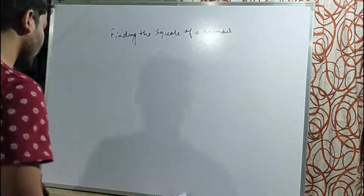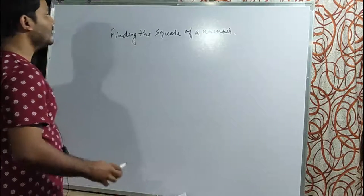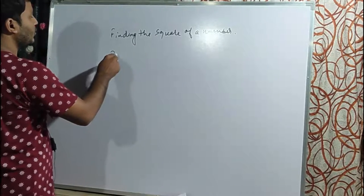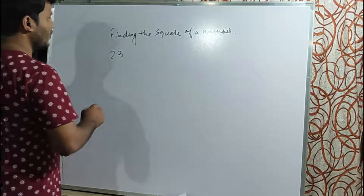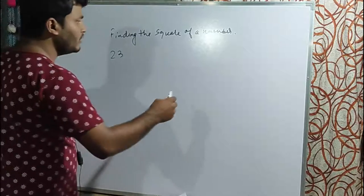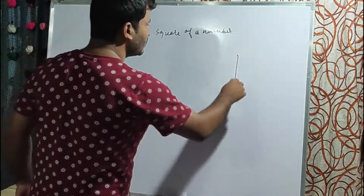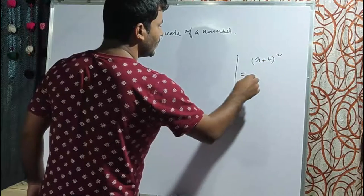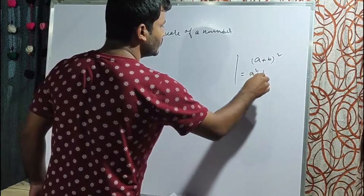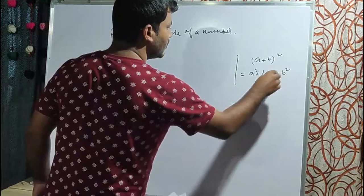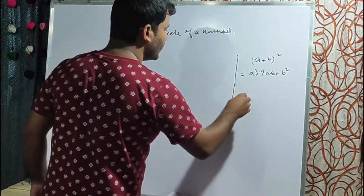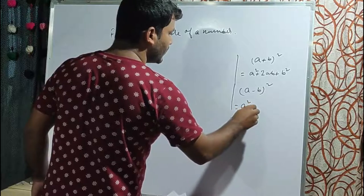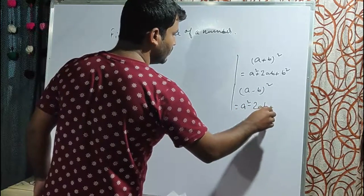The next topic is finding the square of a number using a simple method with formulas. First, (a+b)² = a² + 2ab + b². Second, (a-b)² = a² - 2ab + b².